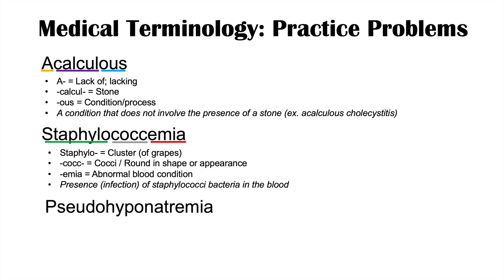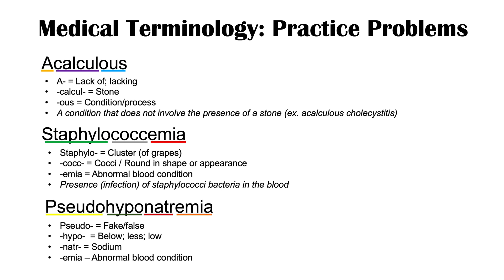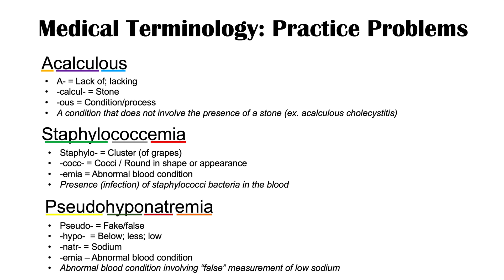The next word is pseudohyponatremia. The prefix pseudo means fake or false — something appearing to be real but isn't. Hypo means below or less or low, and natr means sodium. The suffix emia means abnormal blood condition. So pseudohyponatremia means an abnormal blood condition involving a false measurement of low sodium — it's actually a laboratory artifact where something disrupts the measurement, making the sodium level appear low when it really isn't.